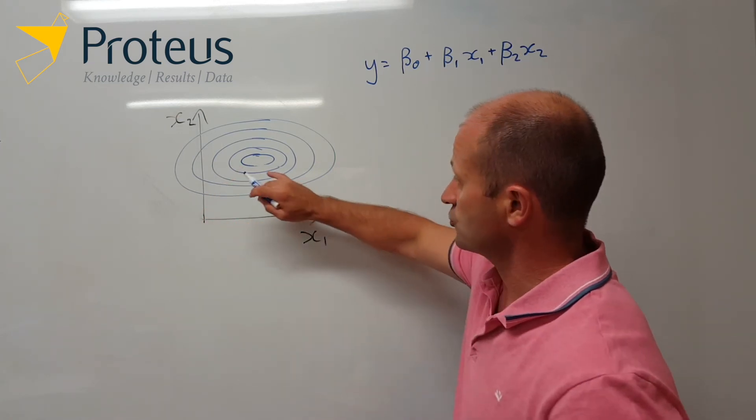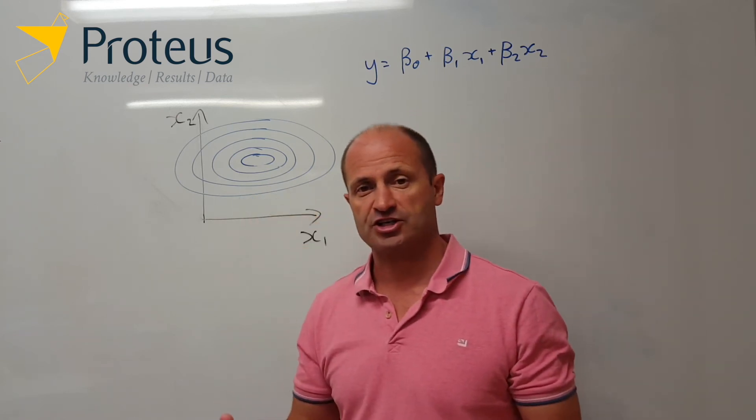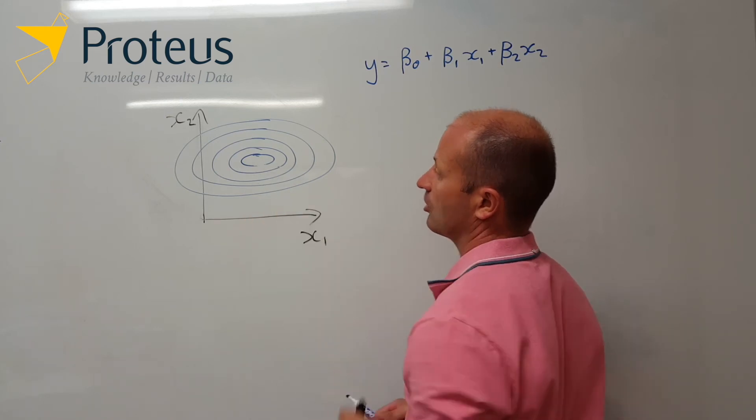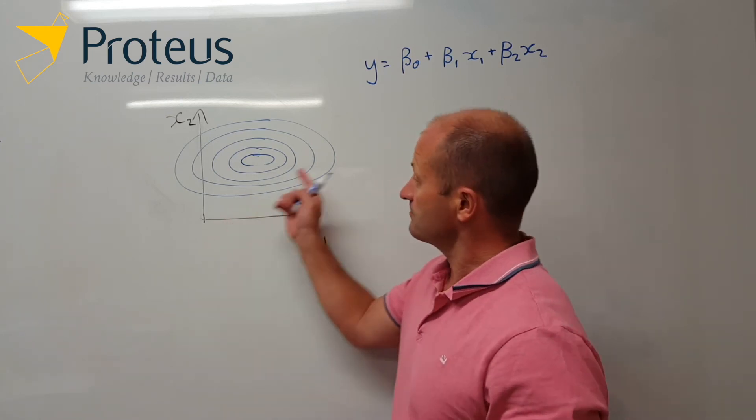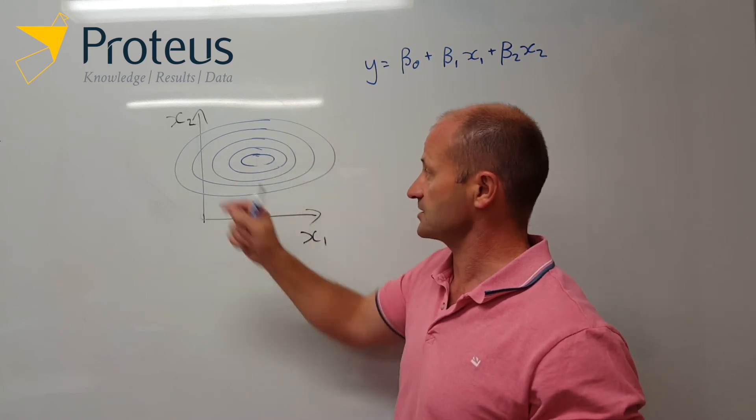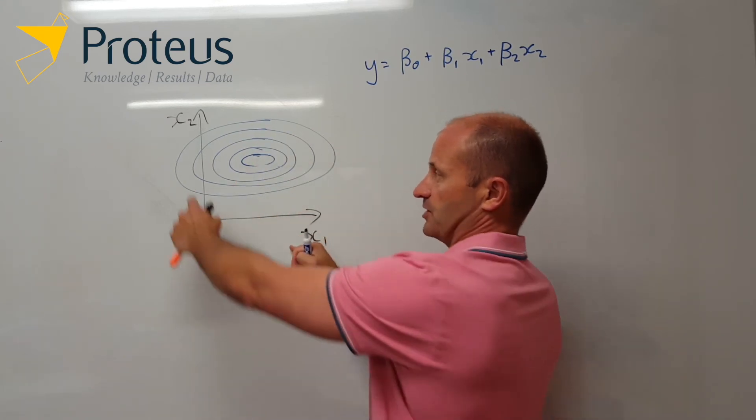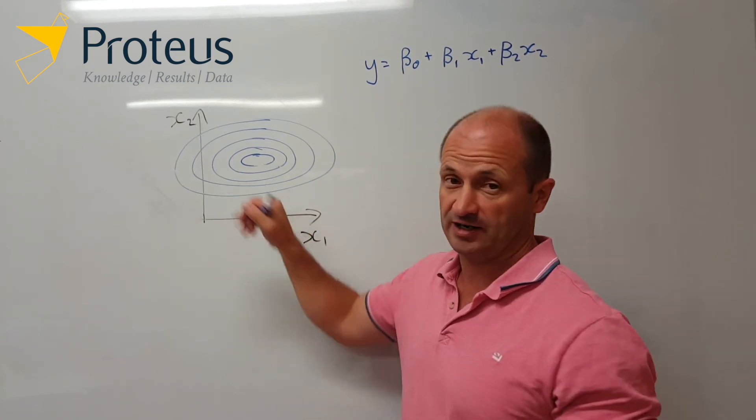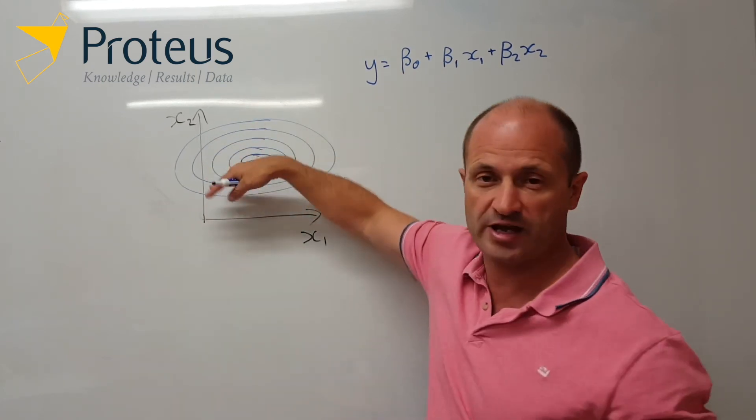And the key thing is that in this situation here, if we have no interaction between x1 and x2, then the orientation of these ellipses is that the minor and the major axes of these ellipses have to be in line with the axes of x1 and x2. So it's got to be sort of square on that graph.